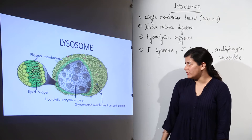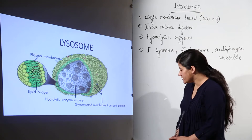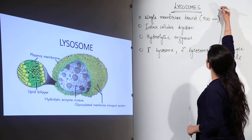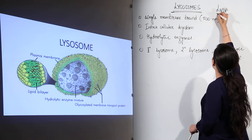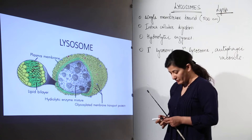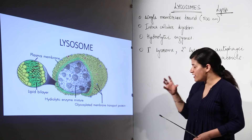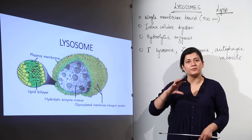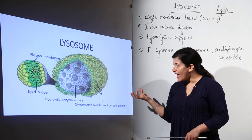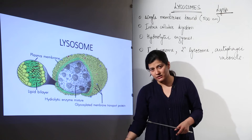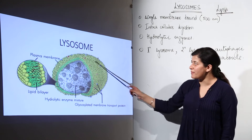Let us take into account another endomembranous structure: the lysosome. The name itself suggests the term 'lyso,' which is quite near to the term 'lysis.' Lysis refers to the breakdown of something. The lysosome is a vesicle-sort of thing which buds off from the Golgi apparatus. We have studied in Golgi apparatus that there is a budding of secretory vesicles, and a lysosome was seen nipping out of it.